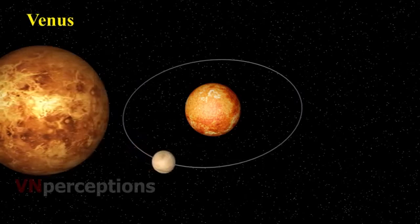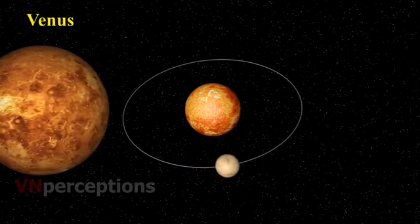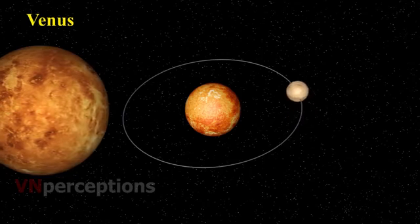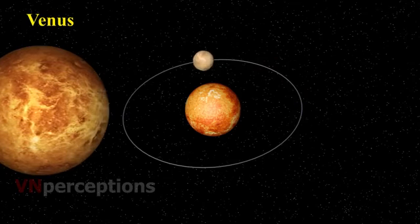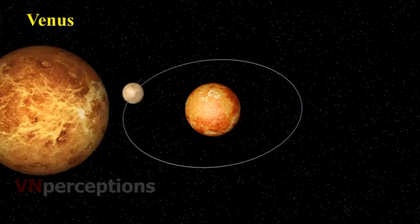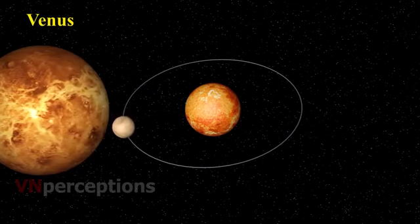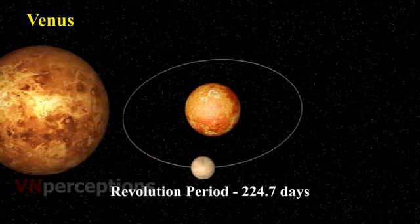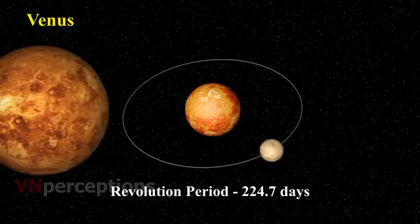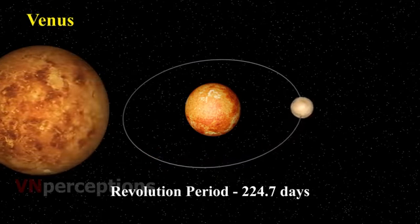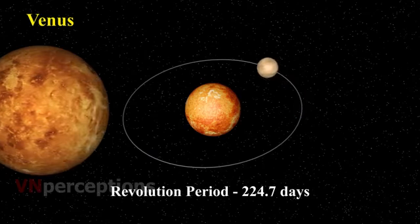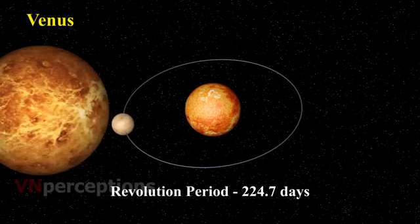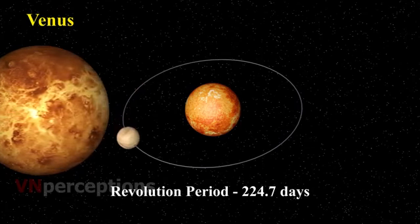Next comes Venus. Venus is Earth's nearest planetary neighbour. Venus is the second planet from the sun and the third brightest object in the Earth's sky after the sun and the moon. Venus orbits the sun every 224.7 Earth days. Sometimes Venus appears in the eastern sky before sunrise. Sometimes it appears in the western sky just after sunset.